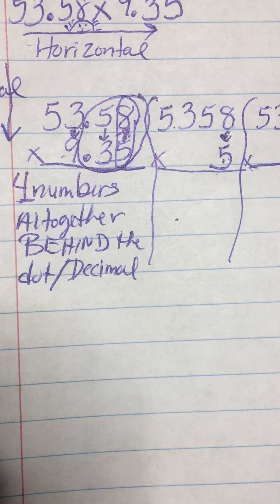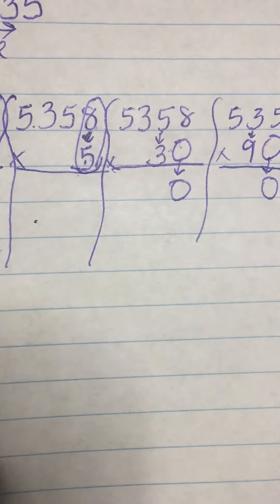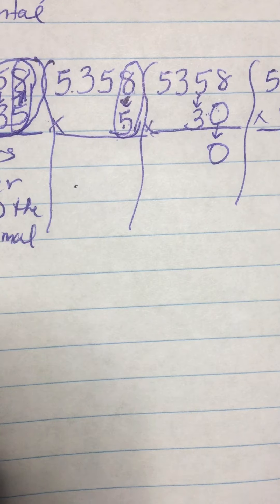So, 935. So, let's start here with the last number. Eight times five. If you don't remember your eight times table.